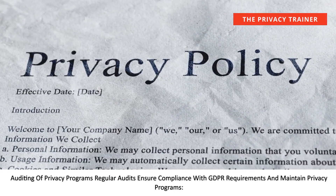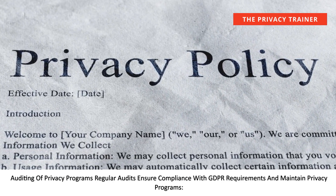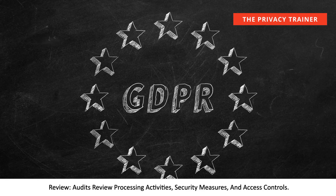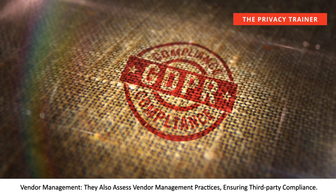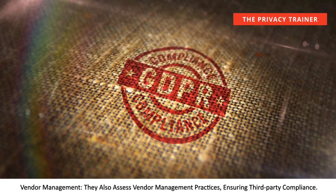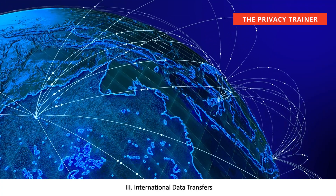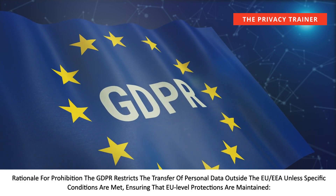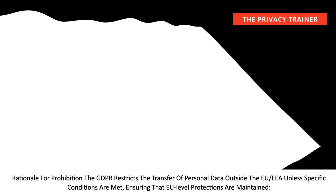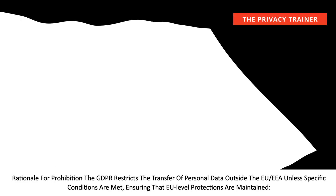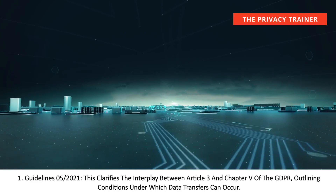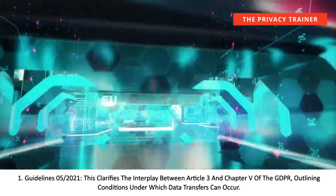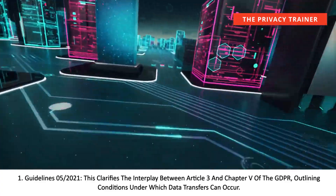Regular audits ensure compliance with GDPR requirements and maintain privacy programs. Audits review processing activities, security measures, and access controls, and also assess vendor management practices to ensure third-party compliance. Regarding international data transfers, the GDPR restricts the transfer of personal data outside the EU/EEA unless specific conditions are met, ensuring that EU-level protections are maintained. Guidelines 05-2021 clarifies the interplay between Article 3 and Chapter 5 of the GDPR, outlining conditions under which data transfers can occur.